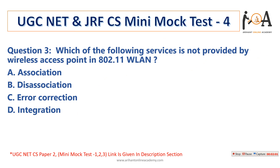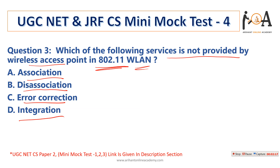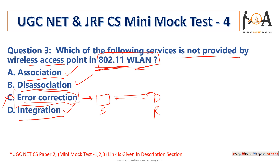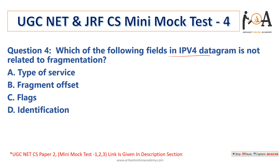Question 3: Which of the following services is NOT provided by a wireless access point in 802.11 WLAN? Options: association, disassociation, error correction, or integration. Association, disassociation, and integration are all part of 802.11 wireless access network, but error correction is not a part of 802.11. Error correction involves different policies for handling differences in sending or receiving data.